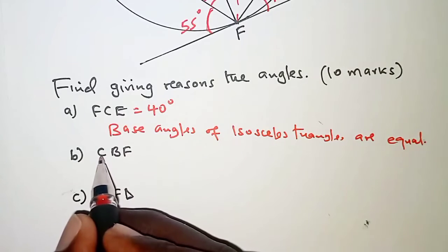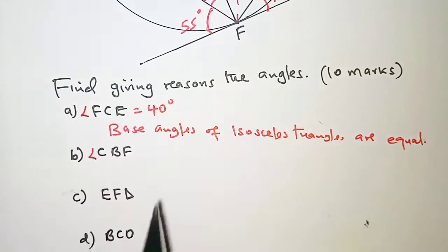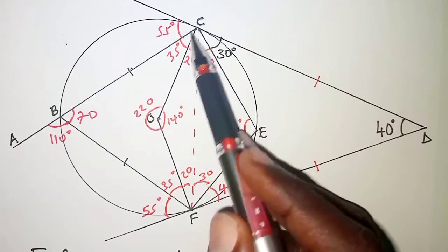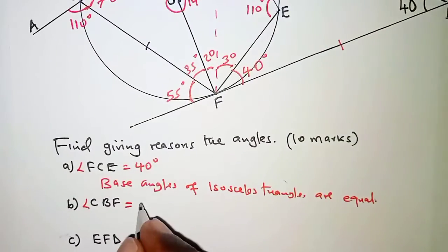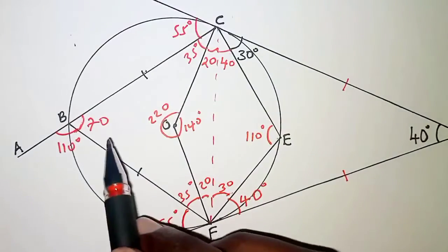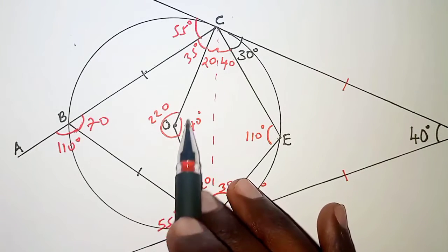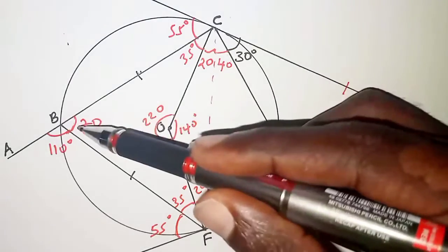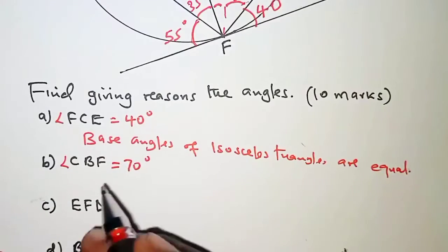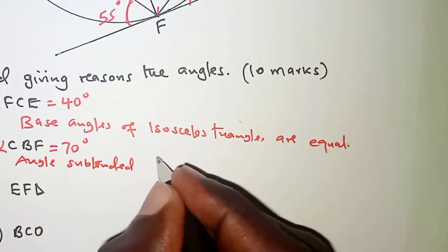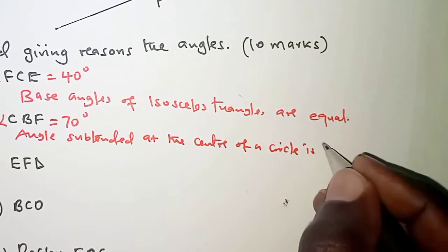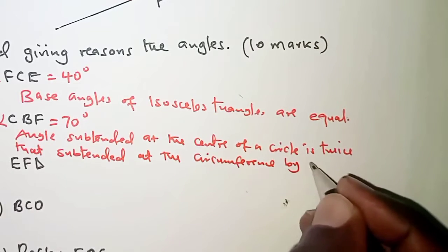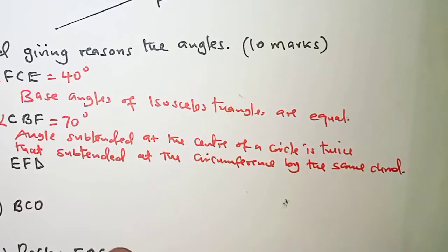Next, angle CBF. Angle CBF is 70 degrees. The reason is that the angle subtended at the center of a circle is twice the angle subtended at the circumference by the same chord. Chord FC subtends 140 degrees at the center and 70 degrees at the circumference.